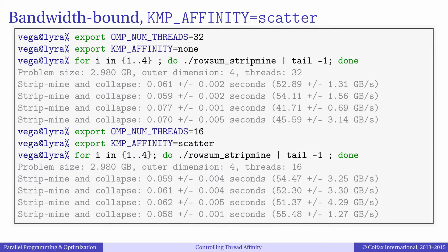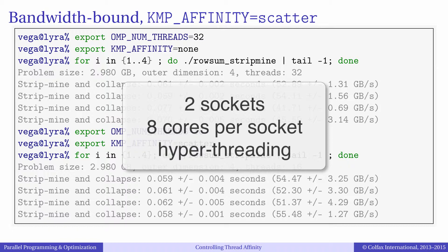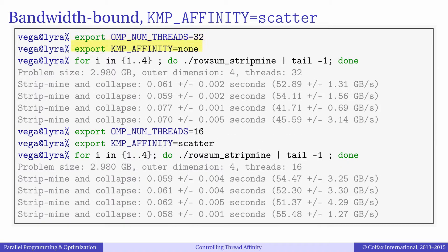Here is an example of how affinity setting improves performance. We are running the application from episode 5.10, which sums elements along each row of a matrix. This application is bandwidth-bound because we perform only one addition operation on every number streamed from memory. The system contains 16 physical CPU cores with hyperthreading enabled, for a total of 32 logical processors. First, we set the number of threads to 32 and affinity to none — equivalent to not setting those variables at all. We run the application four times, and different runs show performance ranging from as low as 42 GB/s to as high as 54 GB/s. This is because the distribution of threads across cores was favorable in some runs but poor in others.